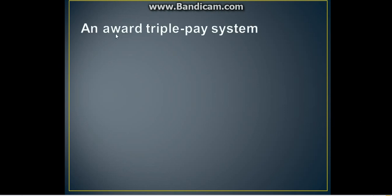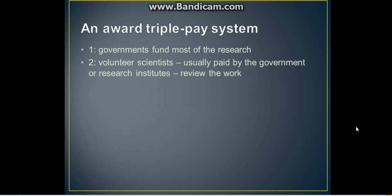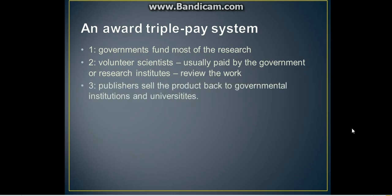We have an awkward triple pay system. Life scientists publishers have created this triple pay system. Number one: governments fund most of the research. Number two: volunteer scientists, usually paid by government or research institutes, review the work. Number three: publishers sell the products back to governmental institutions and universities.